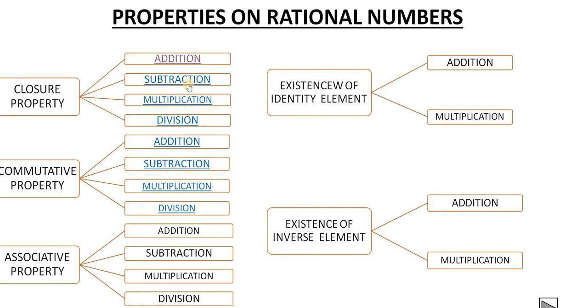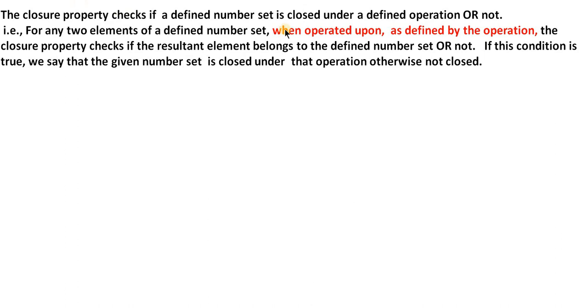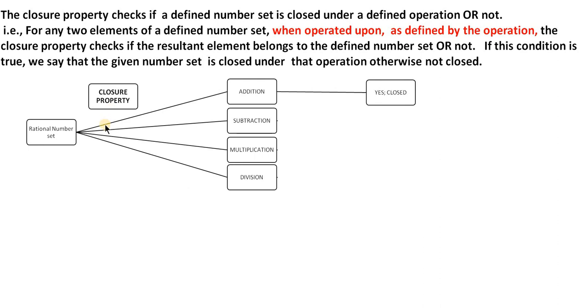Next, we check the closure property for subtraction. The defined operation is subtraction and the defined number set is the rational number set. When two rational numbers are taken and subtracted, the remainder should be a rational number. Let us check: for addition we found it is closed, but for subtraction, is it closed?